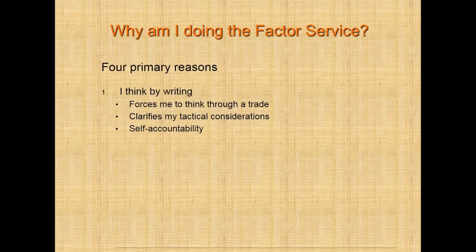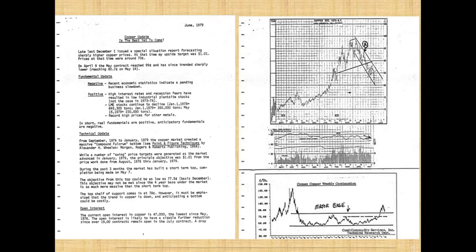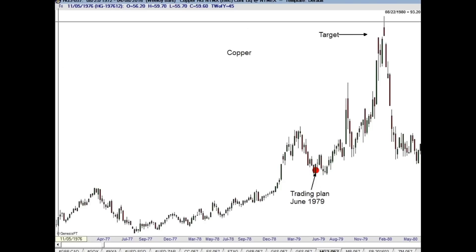I've been writing since going back years. I was going through some files and ran across this — a self-report, an audience of one. I wrote up a copper trade that I wanted to do, and this was in June 1979, just after I had really locked into classical charting. My target in that document was that copper would go to $1.40, and you can see that's where it did. It was a roller coaster along the way, but it made it.